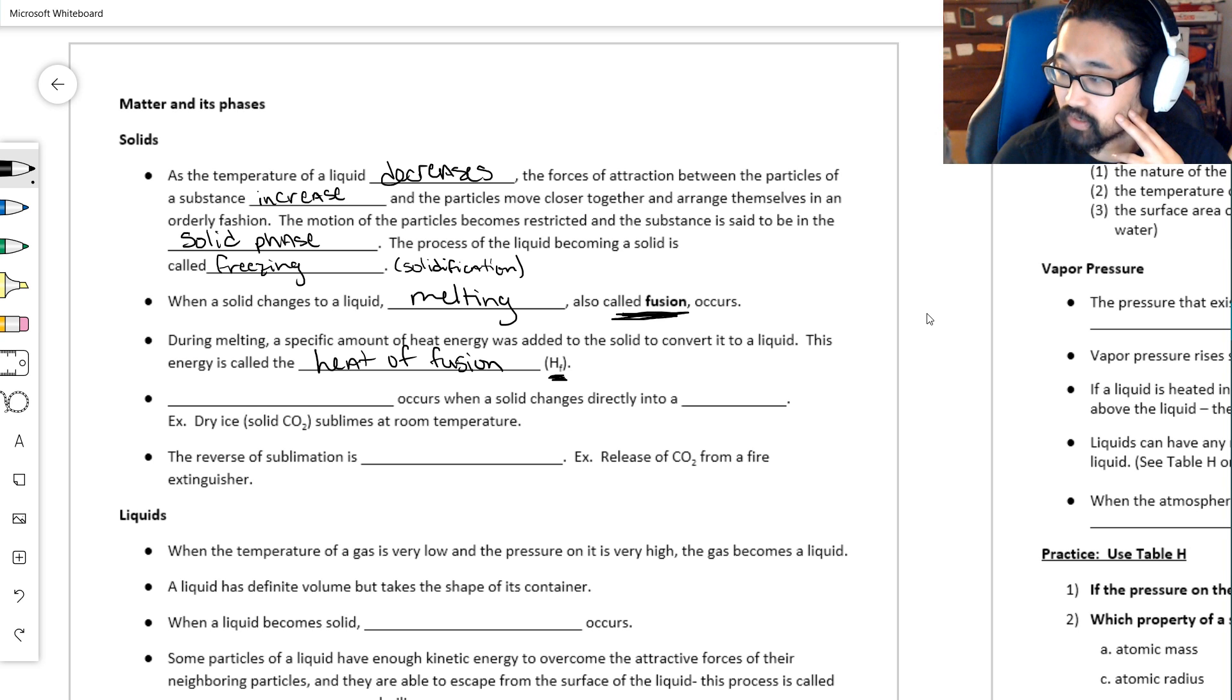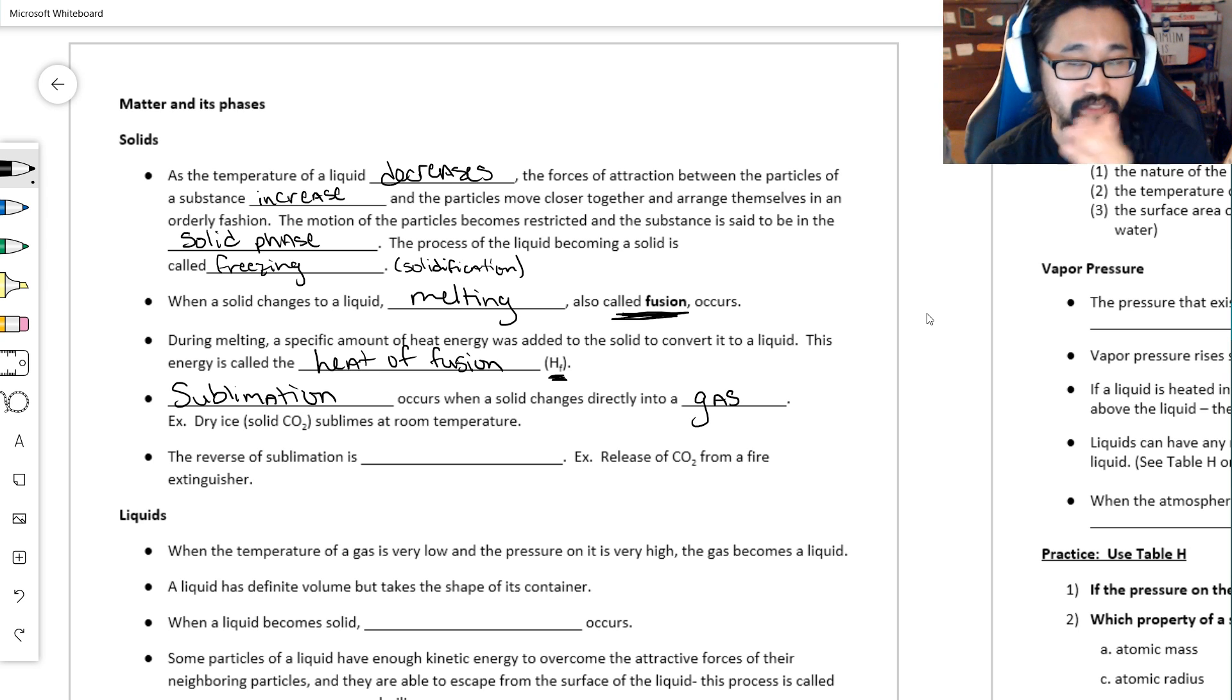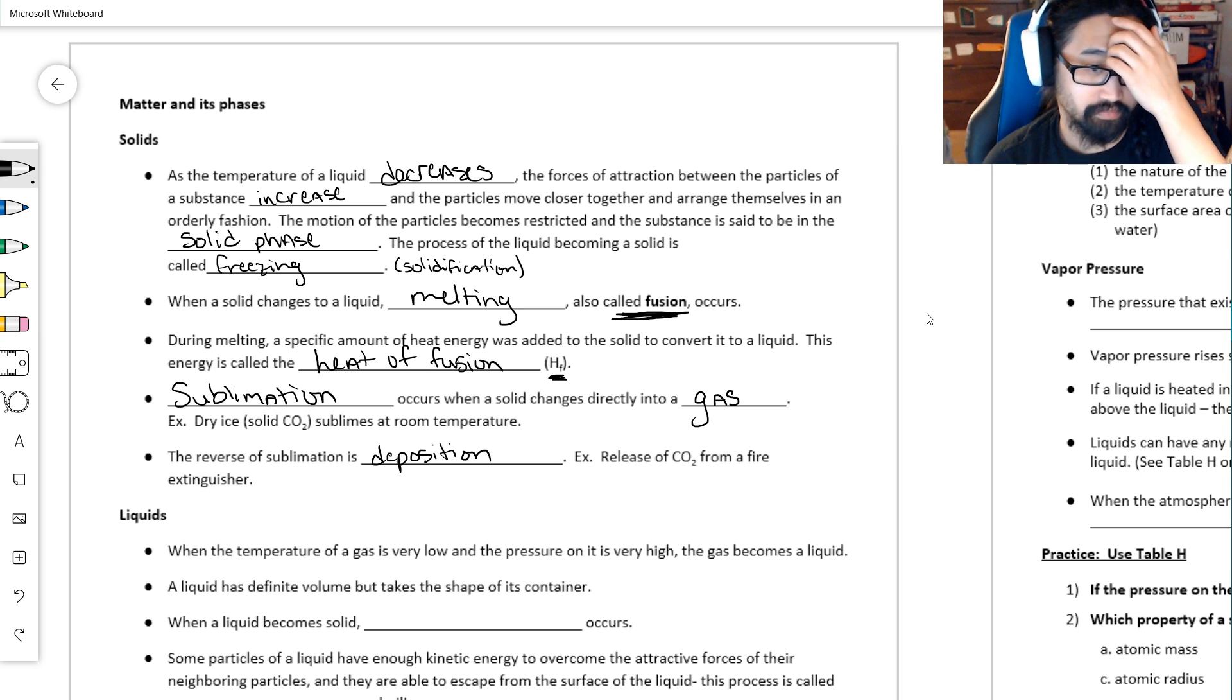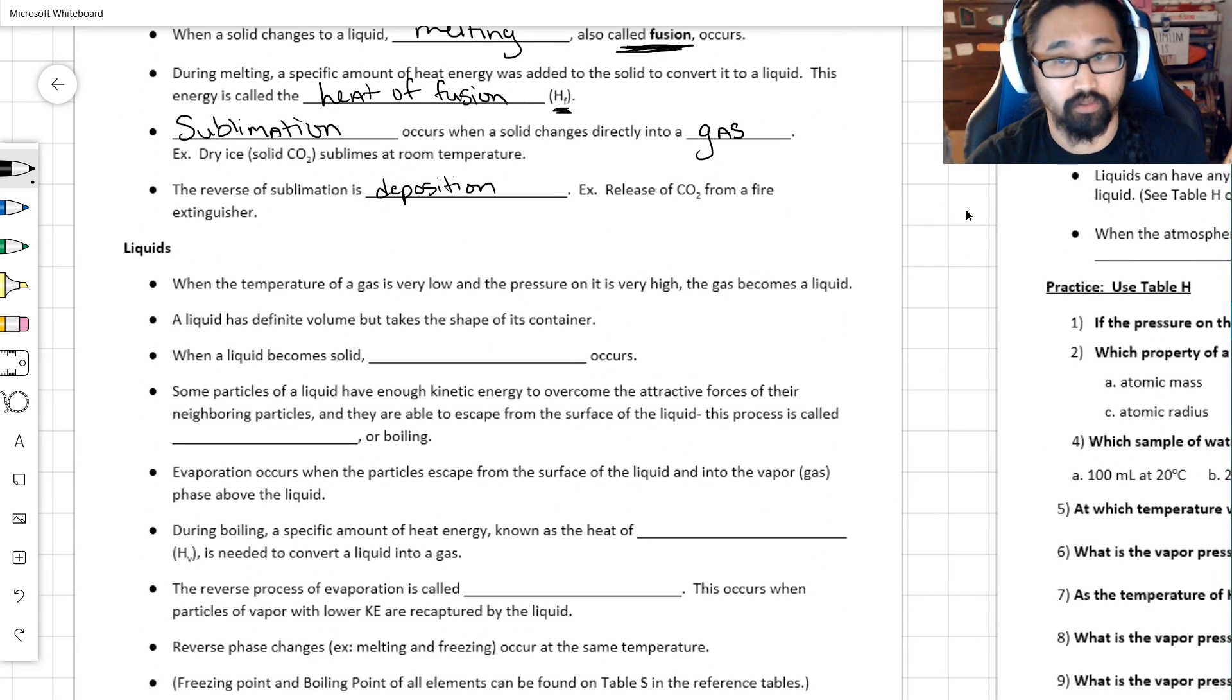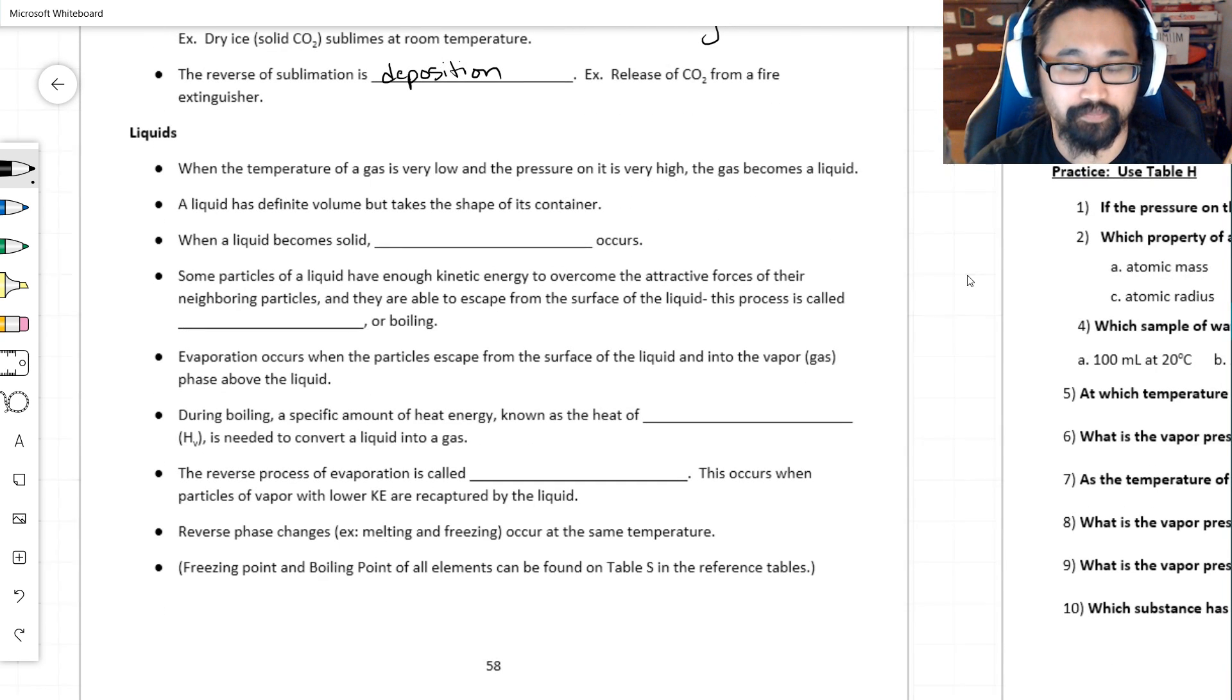Now we know solid to liquid is a phase change. There's also the phase change from solid straight to gas, and we call that sublimation. It obviously has a reverse. Freezing and melting are opposites of each other; sublimation and deposition are opposites of each other. The opposite of sublimation is deposition. Fire extinguishers that have foaming or powdering effects—that's deposition. That's super cold carbon dioxide turning into a solid, going straight from a gas, pressurized gas inside, into a solid.